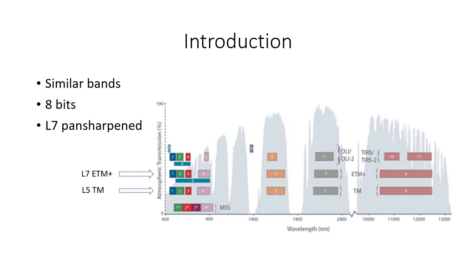Furthermore, both satellites have the same radiometric resolution of 8 bits and almost the same spatial and spectral resolution. The only differences are the near band range and that the L7 has a pan-sharpened band at 15 meter spatial resolution.